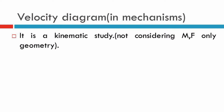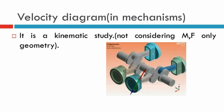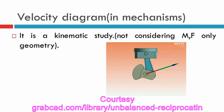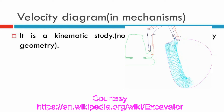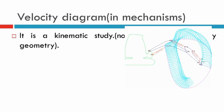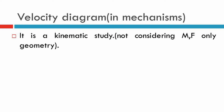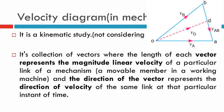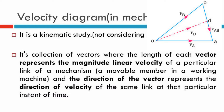It is one type of kinematics study. It means that here we are not going to consider the mass and force of the system. Here, we are going to consider the relative movement between the links — that is, we are only going to consider the geometries. A velocity diagram is a collection of vectors where the length of each vector represents the magnitude of linear velocity, and the direction of the vector represents the direction of velocity of the particular link at an instant in time.